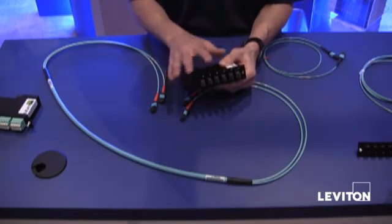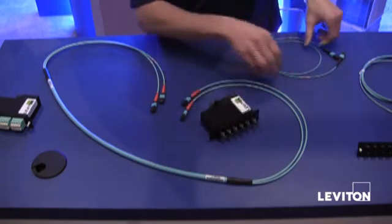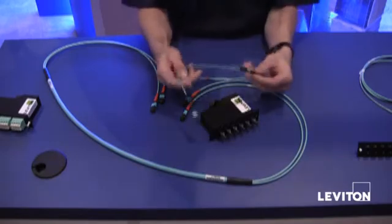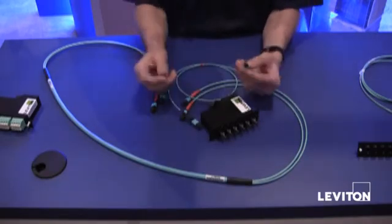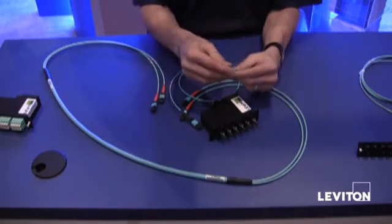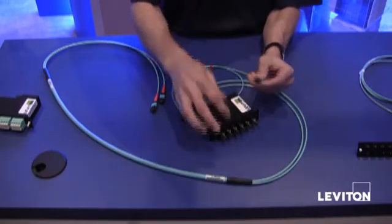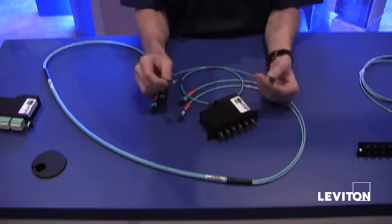Then the next thing that you'll need to complete the channel is an MTP array cord. So this is an array cord. This would be 8 fibers to 8 fibers. You're going to connect those into the module and then direct attach into the equipment.